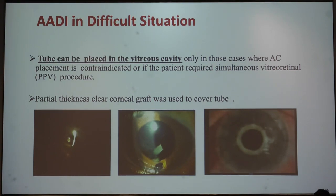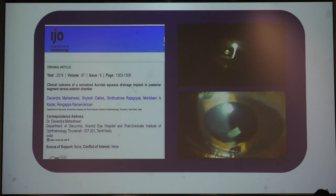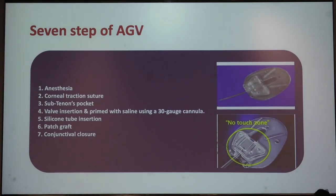In certain situations where a tube cannot be placed into the anterior chamber, we have to do pars plana vitrectomy and place the tube into the vitreous cavity. Outcomes are almost similar to anterior chamber placement.